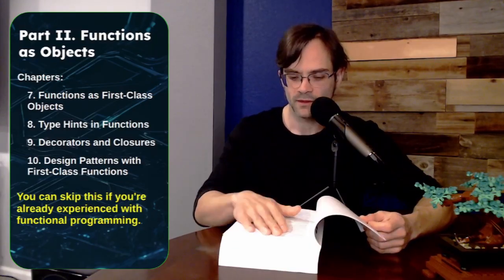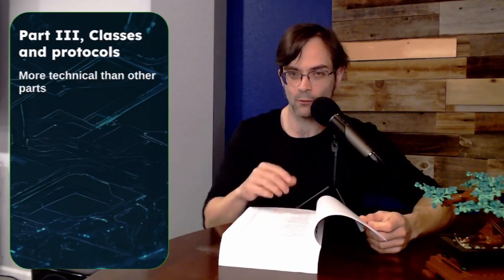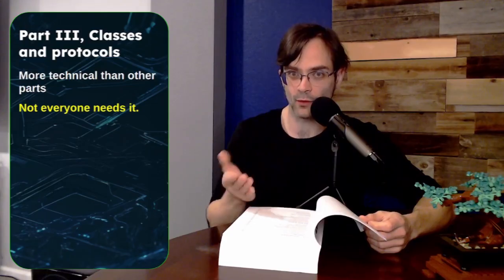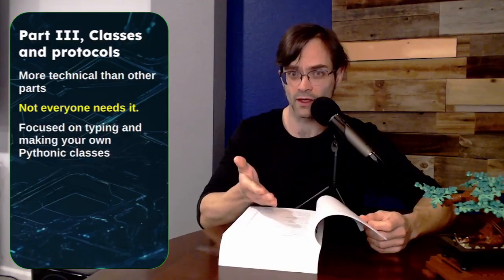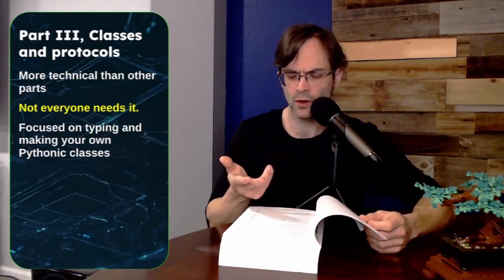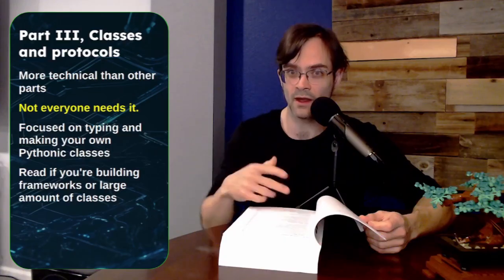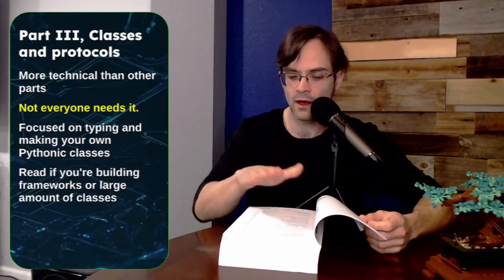So part three is getting kind of deeper into the material, getting into a lot more technical nuance, and not everybody's going to need to read part three. Part three is really most focused on typing in Python and also on building Pythonic objects. Do you want to build a class that behaves in a very smooth, easy, effortless way that's congruent with how the rest of Python works? If yes, read part three.